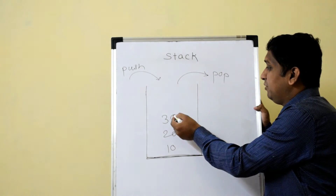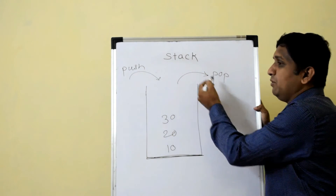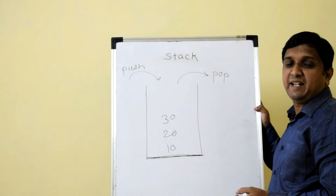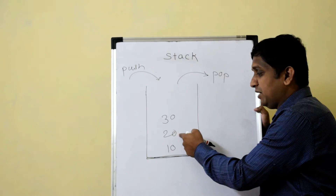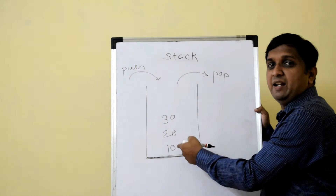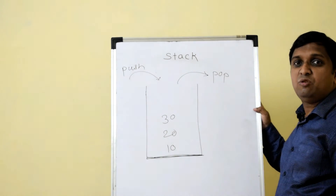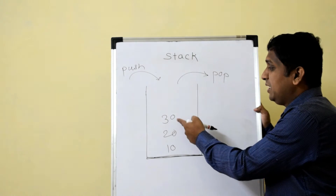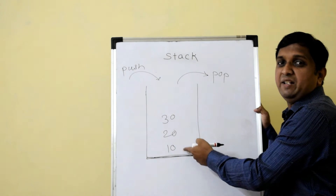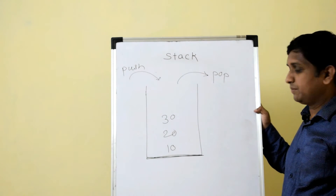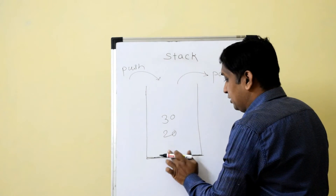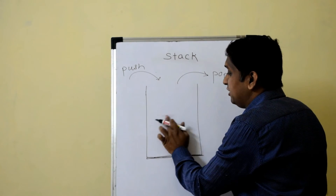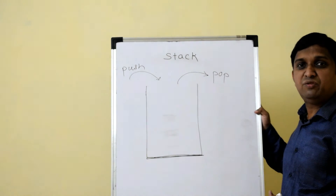When removing elements, the first element to come out is 30 since it is the topmost element. The second element to come out is 20, and then 10. So the output of pop operations will be 30, 20, 10 — this is last in first out: the element inserted last comes out first.